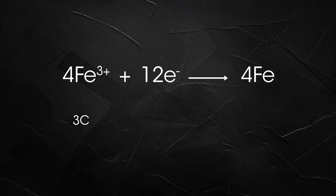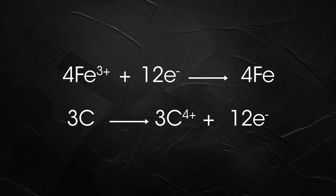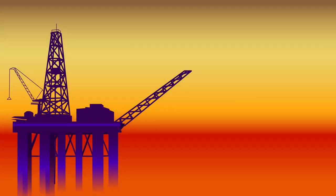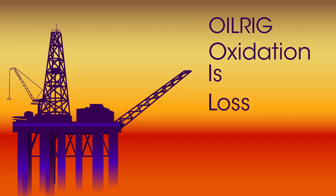All of the electrons lost by the carbon atoms are given to the iron three positive ions. So we have reduction and oxidation, a redox reaction. To recall which way electrons move in a redox reaction, think of oil rig. Oxidation is loss of electrons. Reduction is gain of electrons.